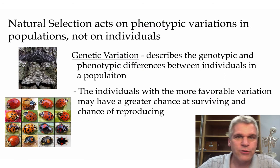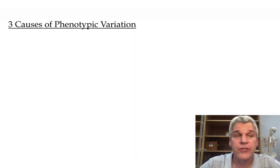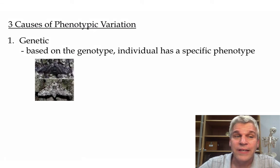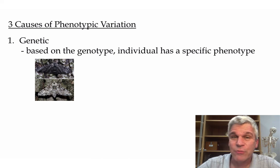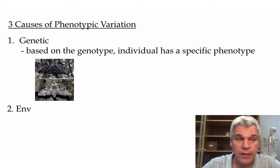In essence, that's what natural selection is saying. There are three causes of phenotypic variation. The first one is genetic — so based on the genotype, individuals have specific phenotypes, and a particular gene codes for a particular trait.